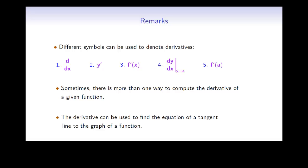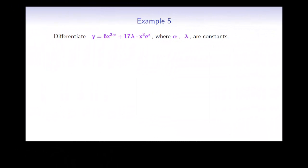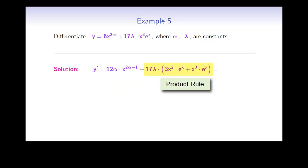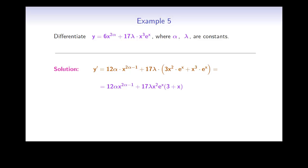Let's move on to example number 5. Differentiate y equals 6x to the 2 alpha plus 17 lambda x cubed e to the x, where alpha and lambda are constants. Alpha and lambda will be treated as fixed numbers, so the derivative of the first term will be 6 times the derivative of x to the 2 alpha, computed using the power rule. The derivative of the second term will be 17 lambda times the derivative of x cubed e to the x, computed using the product rule. We get y prime equal to 12 alpha times x to the 2 alpha minus 1, plus 17 lambda times x squared e to the x times 3 plus x, after factoring.